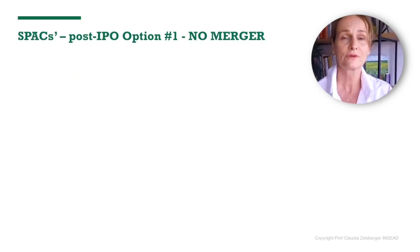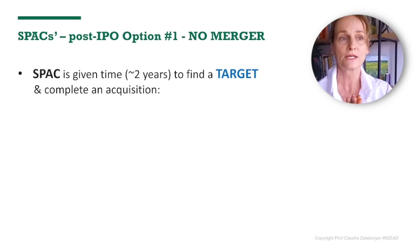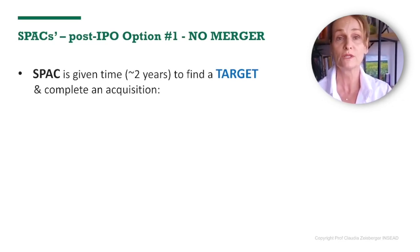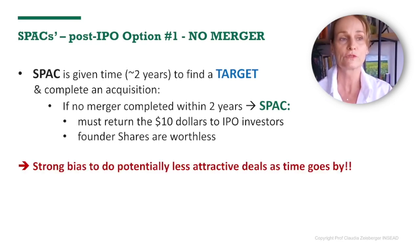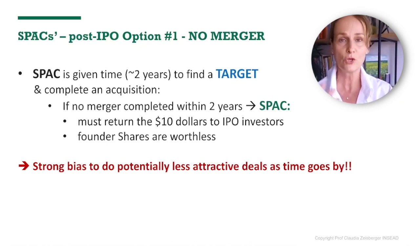So now let's look at what could happen post-IPO. After the SPAC goes public, it is given two years to find a target company and complete an acquisition, with the acquisition usually taking about six months. So they have about a year and a half to determine which company they would like to acquire. Option one: they cannot find a target, so no merger happens. If this is the case, the SPAC has to return the $10 to the IPO investors, and the founder shares become worthless. That means the sponsors have a strong incentive to find a target company and acquire it, whether it is a good one or not, because not doing a deal is significantly worse than doing a bad deal.